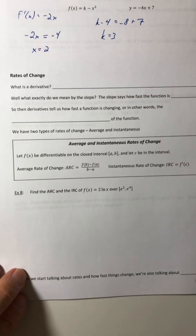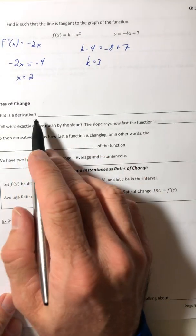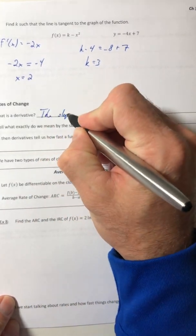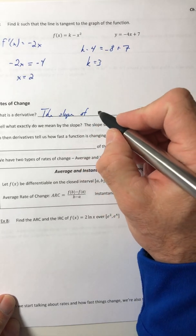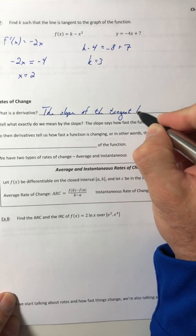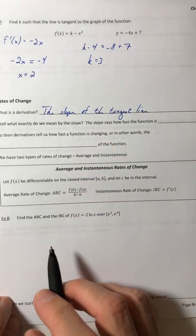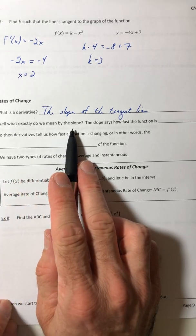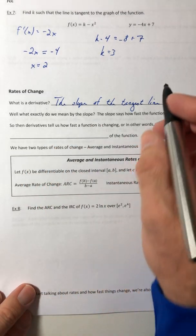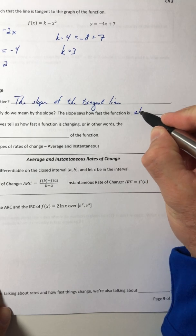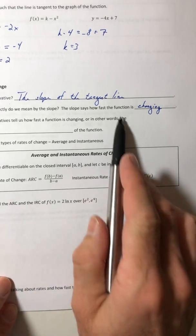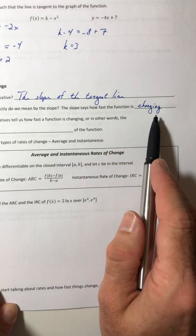So we asked this question a little bit earlier. What is the derivative? Well, it's the slope of the tangent line. So what exactly do we mean by the slope? And this is just kind of in general anyway, like what do we mean by the slope? Well, the slope says how fast the function is changing, whether it's a line, a curve, whatever the function is. The slope is going to tell you how fast that function is changing.